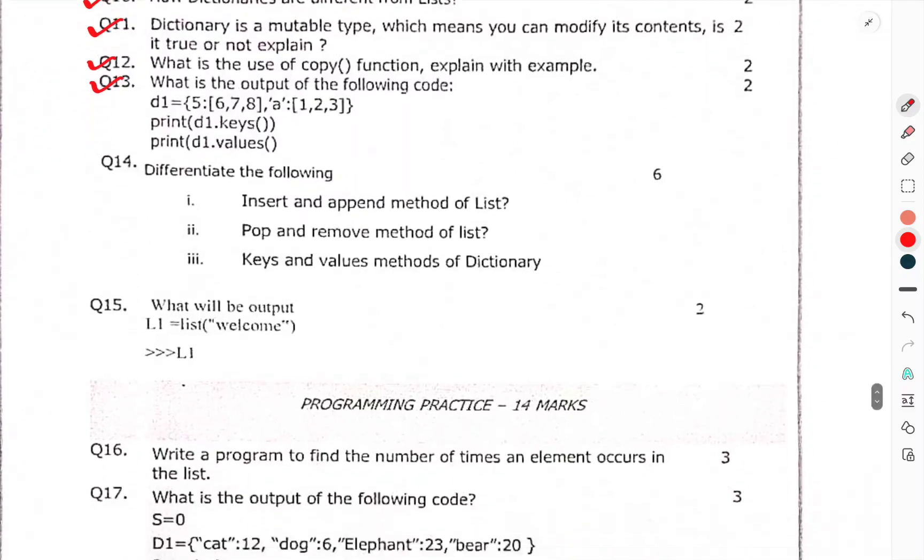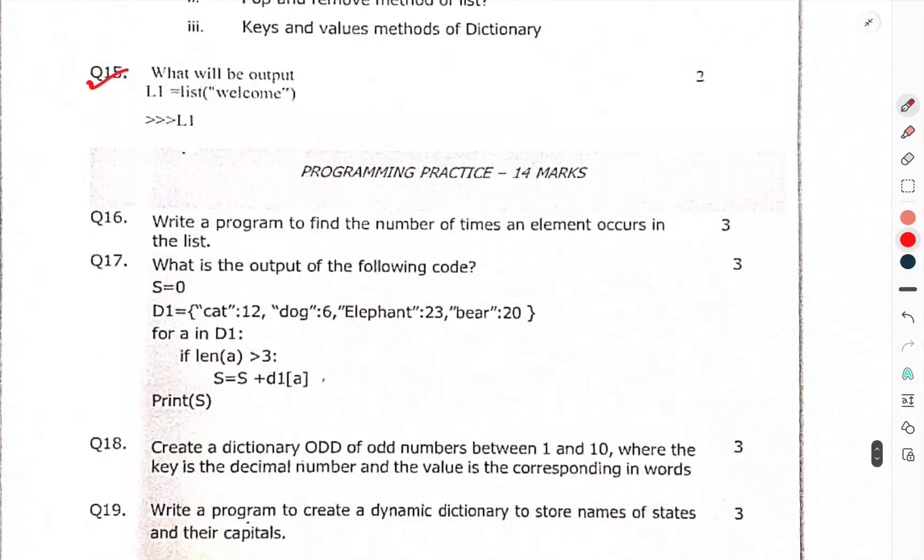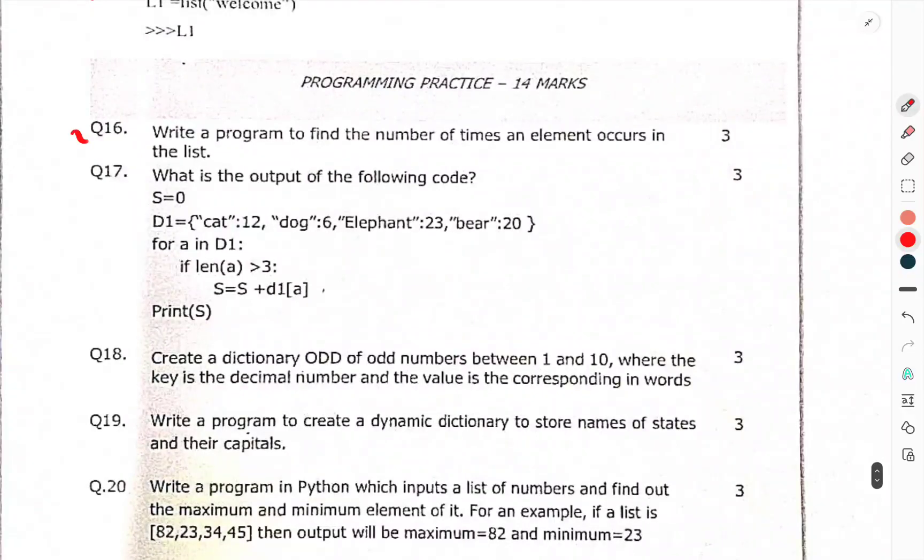What is the output of the following code? Differentiate the following. What will be the output? This is the output release programming key. Write a program to find the number of times an element occurs in the list. What is the output of the following code?